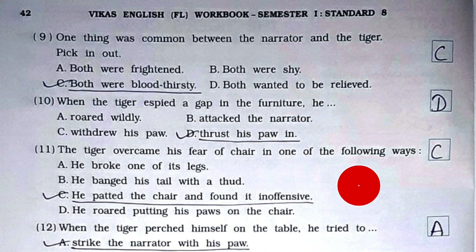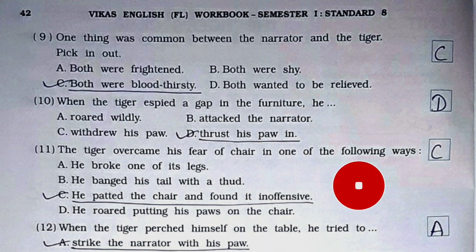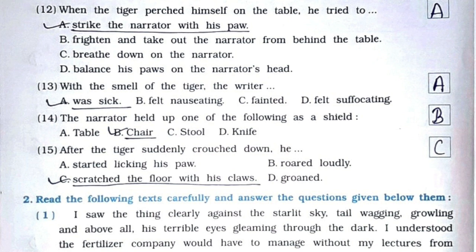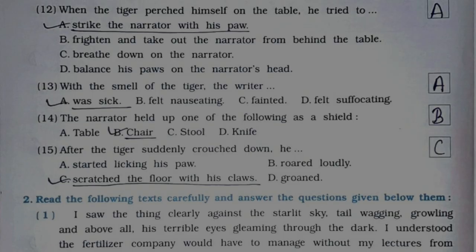MCQ 10: When the tiger espied a gap in the furniture, he — option D: thrust his paw in. MCQ 11: The tiger overcame his fear of the chair in one of the following ways — option C: he patted the chair and found it inoffensive. MCQ 12: When the tiger pushed himself on the table, he tried to — option A: strike the narrator with his paw. MCQ 13: With the smell of the tiger, the writer — option A: was sick. MCQ 14: The narrator held up one of the following as a shield — option B: chair.